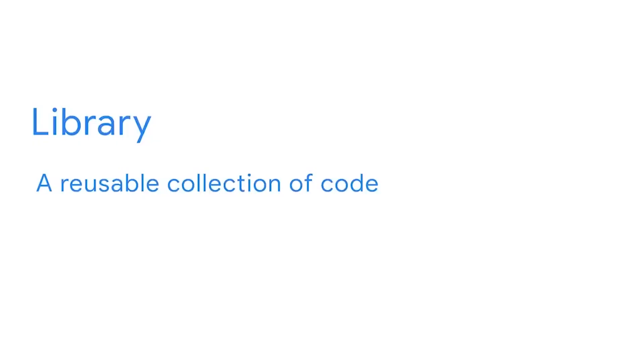A library is a reusable collection of code. For instance, you could hand code a function that takes two numbers, adds them together, and returns the sum. But what if now you want to add three numbers or four? You can write a more complex function that lets you input any combination of numbers, and it will return the sum.